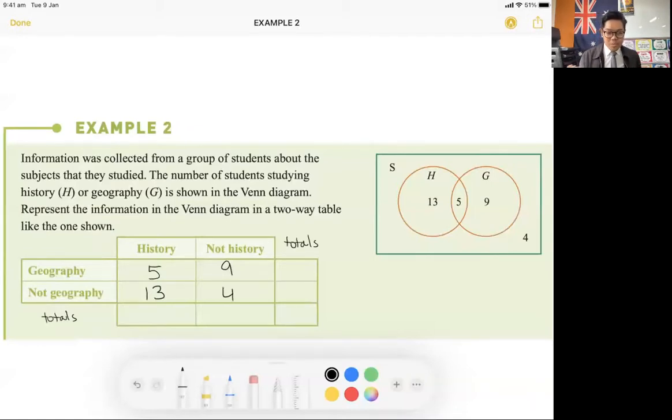So let's just do the simplest ones I can see. Five plus nine is 14, so I'm just going to write that in my totals column. Again, I'm going to do 13 plus four, which gives me a total of 17. Now, what that tells me is there's 17 people that don't study geography. There's also 14 people that do study geography because they're all in the same kind of line.